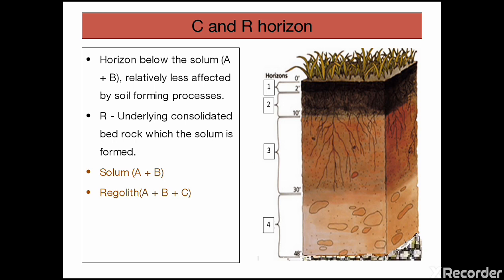Below this solum we can see C horizon and A, B, C horizon combined form regolith. So A plus B horizon is called as solum and A plus B plus C horizon together called as regolith. Regolith is an underlying consolidated bedrock through which the soil is formed.